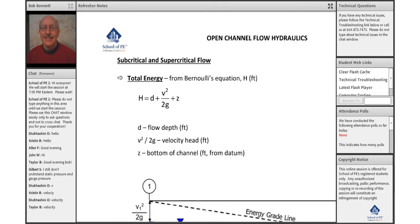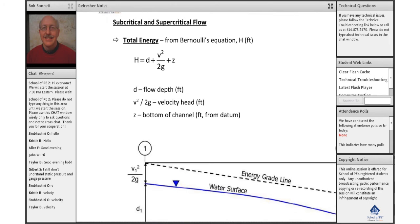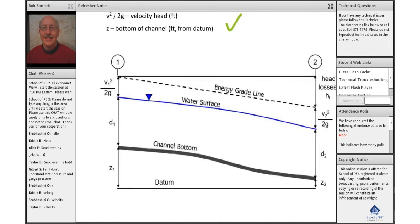Continuing on with this definition, the total energy of a point in an open channel is of course given by the equation of capital H is equal to our depth of flow plus our v squared over 2g plus our z, which is typically the channel bottom, which is used as the datum.